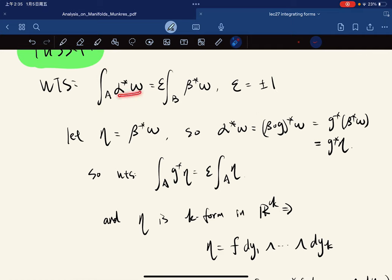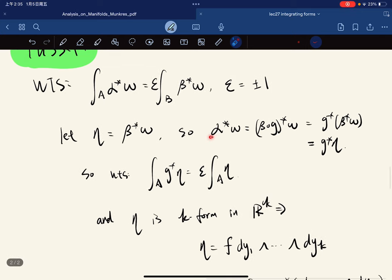But let's simplify this. So we let nita equal to this one. So this one, you can do this, which is G star of nita. So what we want is to show this. So we make this thing more easier.